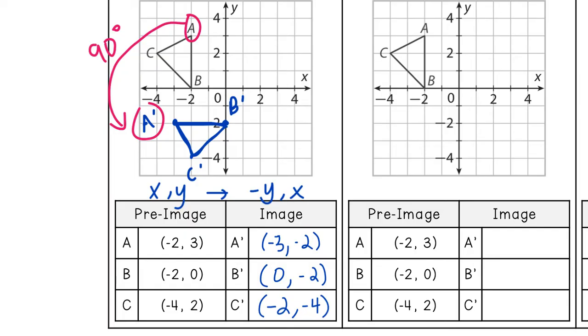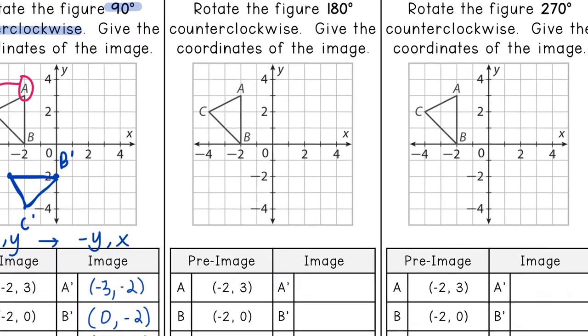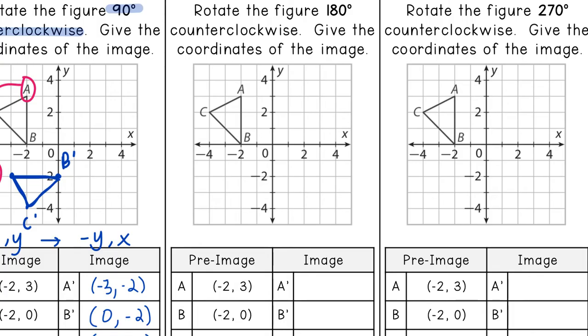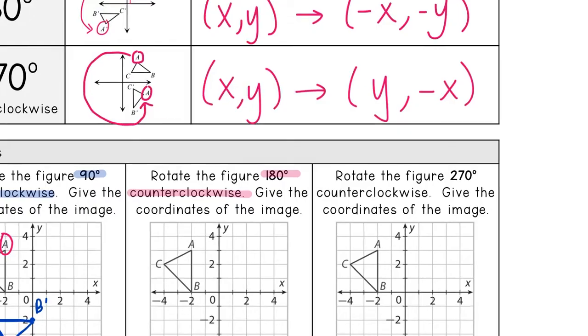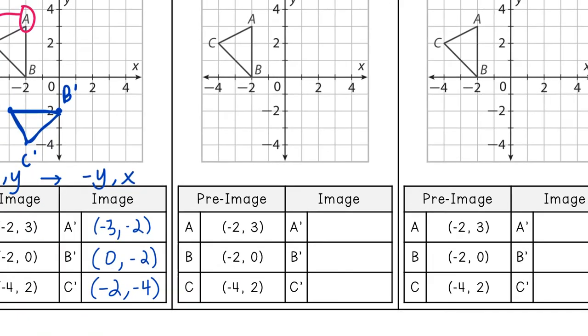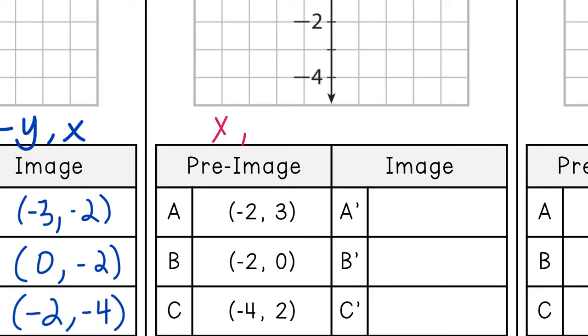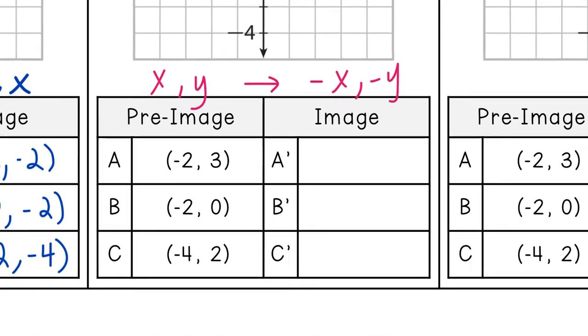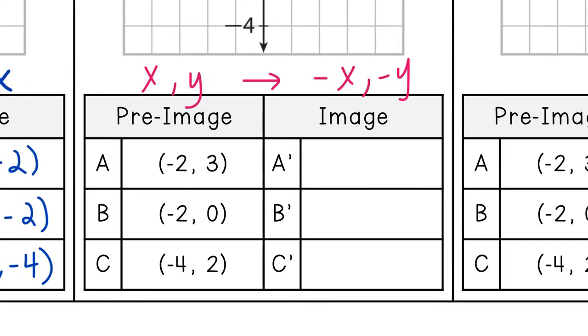Now let's look at the second one. It says rotate the figure 180 degrees counterclockwise and give the coordinates of the image. So 180 degrees. From our notes above, we're going to follow that rule. All we have to do is (x, y) turns into (-x, -y).